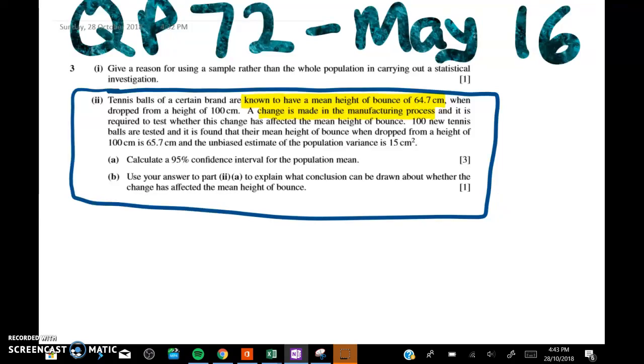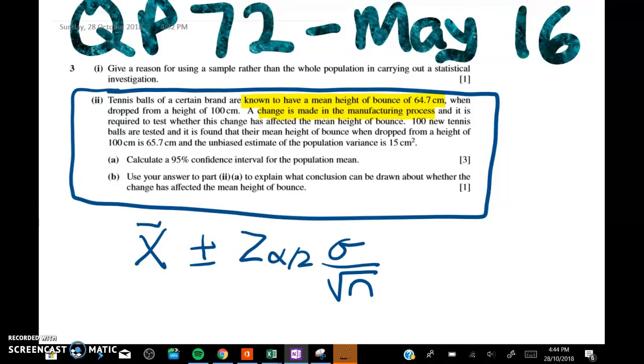In this case, they want you to do it with a confidence interval. If they want a confidence interval, what we're looking for is a setup like this: x̄ plus or minus the z value times the standard error. That's all there is to it.